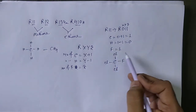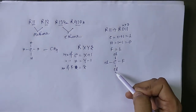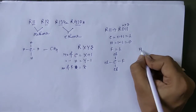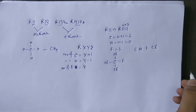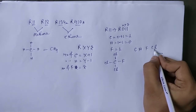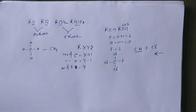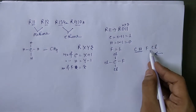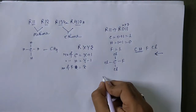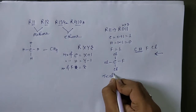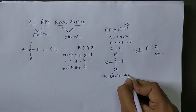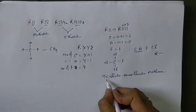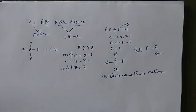For R11: 3 chlorine atoms and 1 fluorine have been placed, and since hydrogen is 0, hydrogen's place is taken by chlorine. When we write the name, fluorine and chlorine come first, then the base — methane or ethane. This gives us trichloromonofluoromethane.